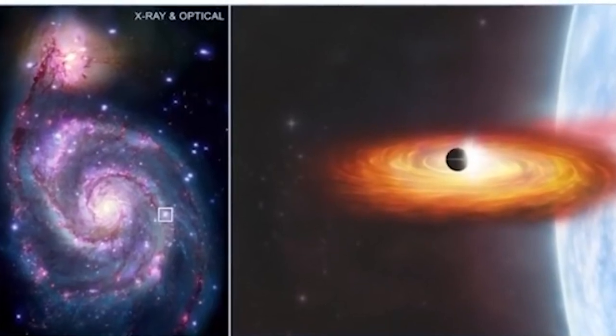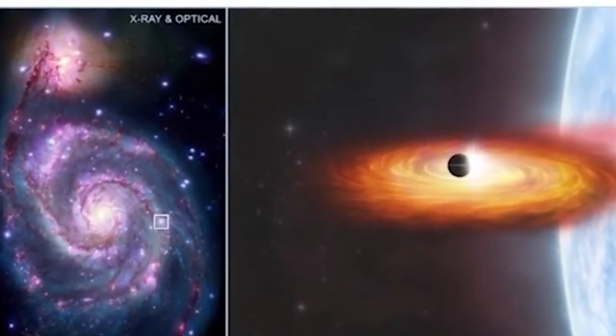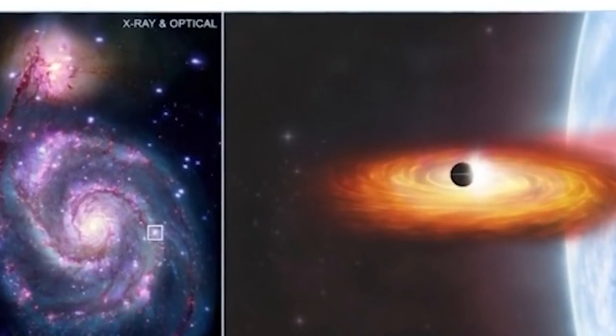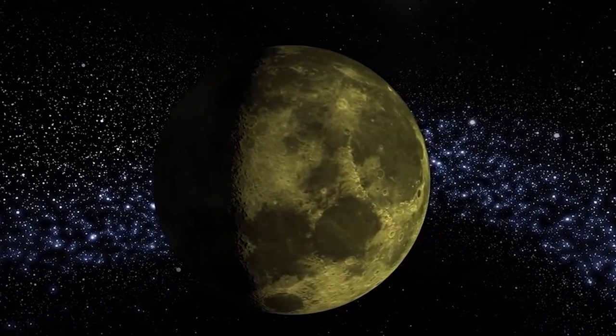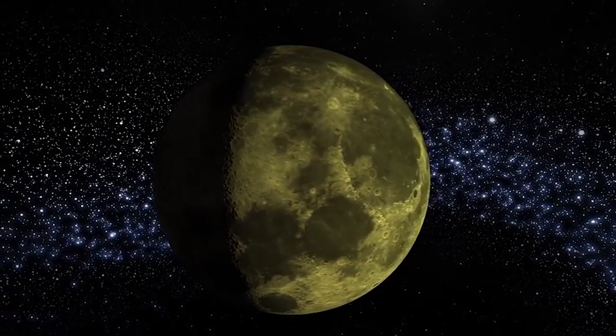Our solar system is situated 26,000 light years from the galactic center, on the inside edge of one of its spiral arms. It would take the interstellar probe Voyager 1 more than 450 million years to travel there.